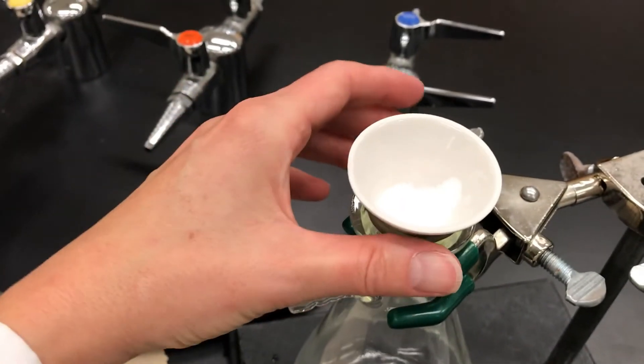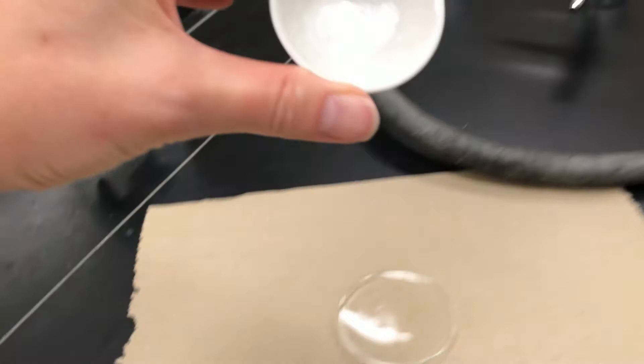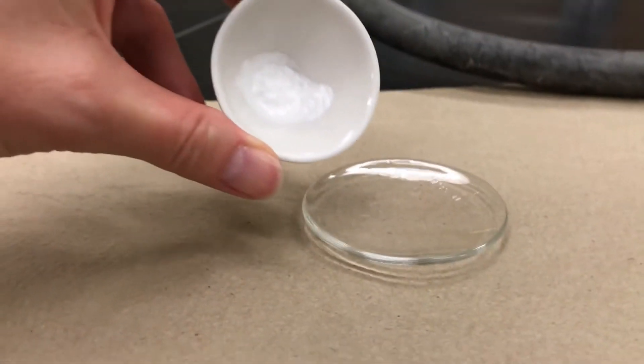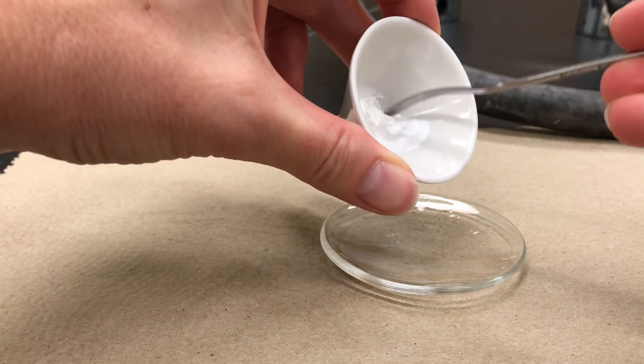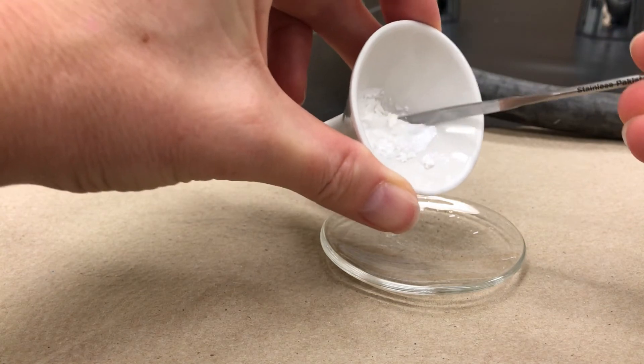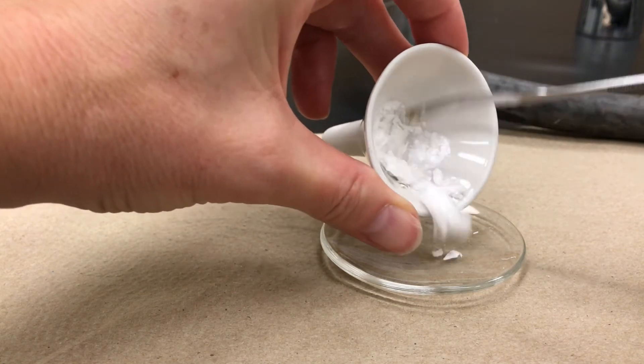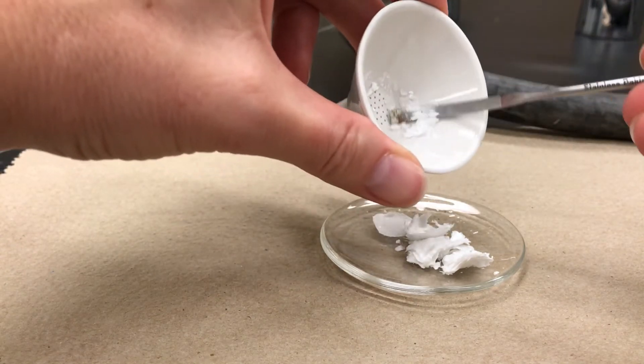And then you want to take your solid and dispense it onto a pre-weighed watch glass. You can use a spatula to transfer the solid onto the watch glass, and it's a good idea to even transfer the filter paper as well. Take the whole thing onto the watch glass.